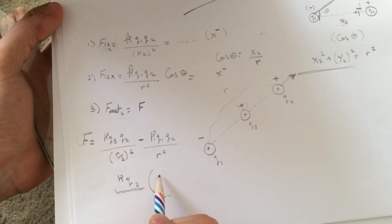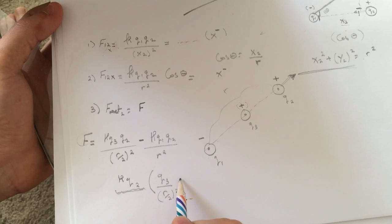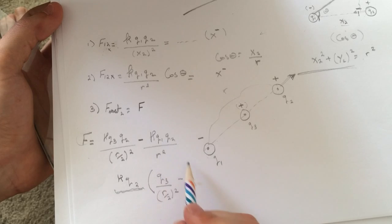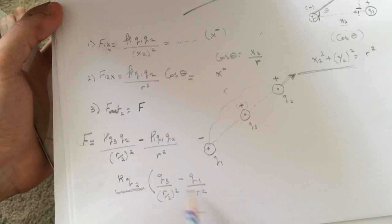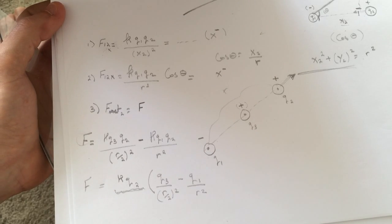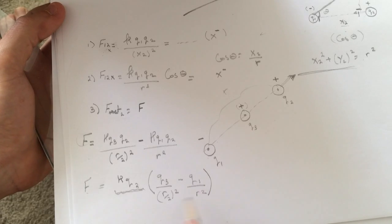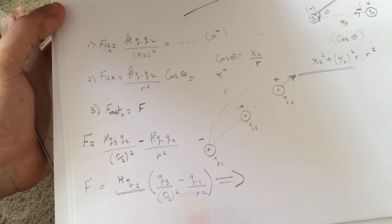So K Q2 and then you'll do Q3 divided by R over 2 squared minus Q1 divided by R squared and this whole thing is equal to the force total force.